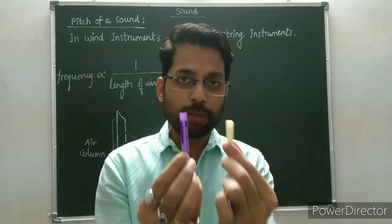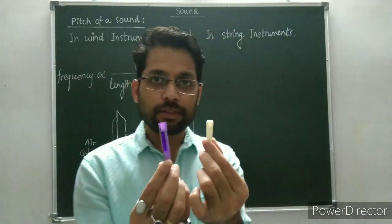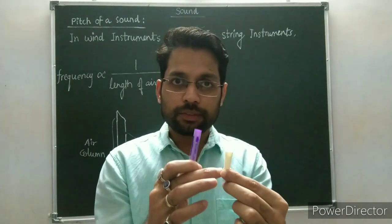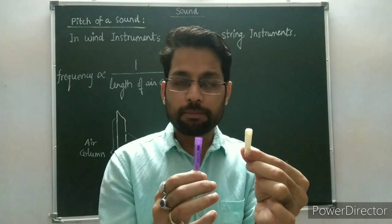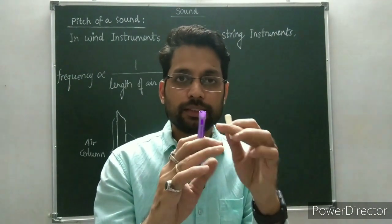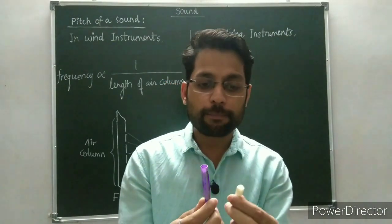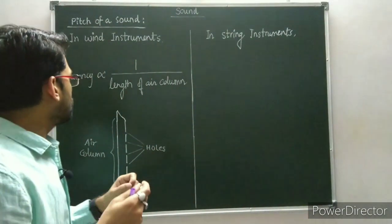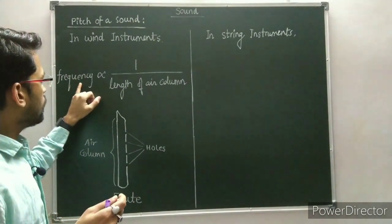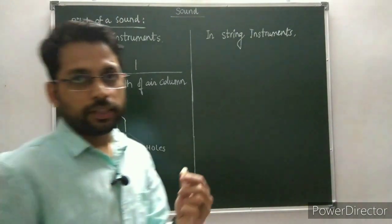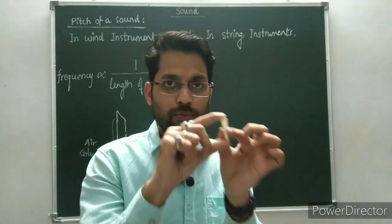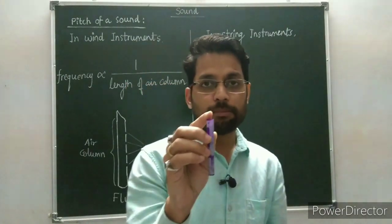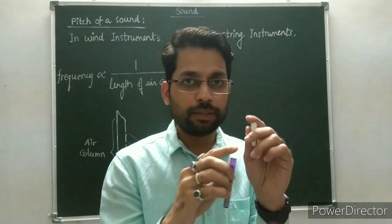Now I am going to show an activity to demonstrate this relation. I have two pipes of different lengths — the white pipe is smaller than the blue one. Since the length of the air column equals the length of the pipe, the white pipe has a smaller air column. The sound from the white pipe will be shrill, and the sound from the blue pipe will be flat by comparison.